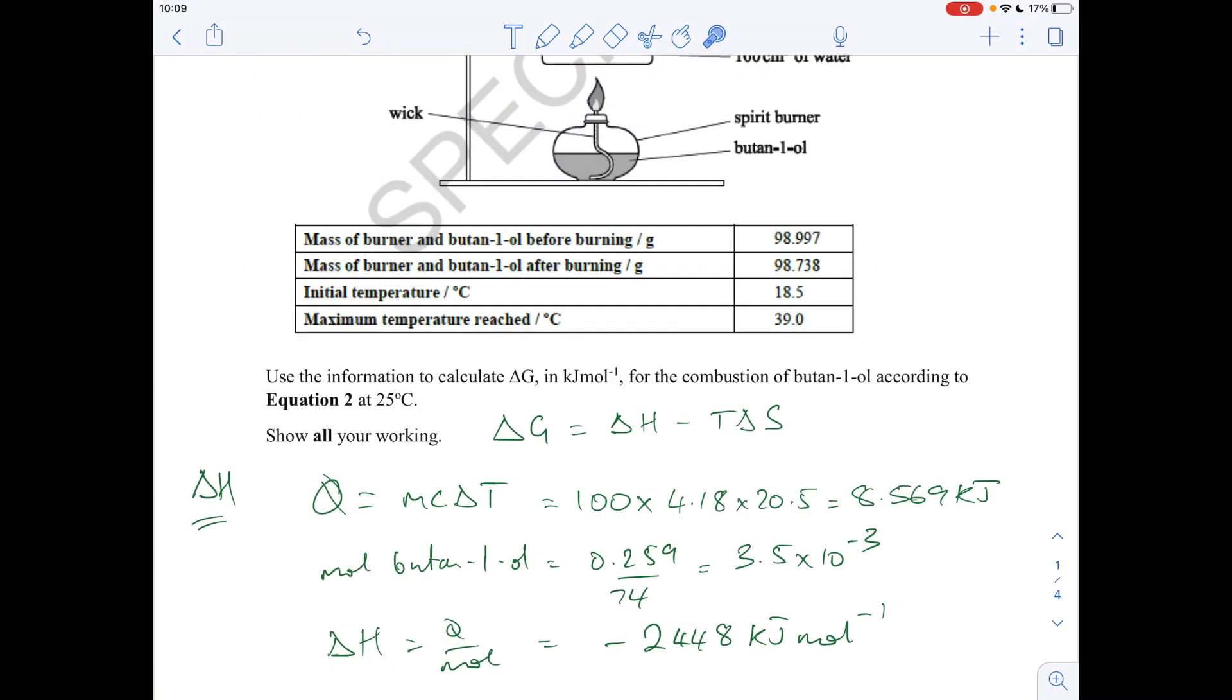Okay, so there's my answer for delta H. I'll just quickly go through it. So we're using Q equals mc delta T. The mass of water in the can was 100 cm cubed, which is 100 grams. Specific heat capacity of water is 4.18. The temperature change was the difference between those two numbers there, 20.5. The answer will come out in joules, so it would have been 8569 joules. I've divided by 1,000 to put it into kilojoules.